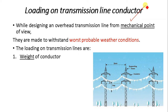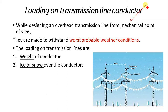The loading on the transmission line is classified into three types. First is the weight of the conductor — for example, in ACSR (Aluminium Conductor Steel Reinforced) there is the weight of aluminium and the weight of steel, so the overall weight is quite high. Second is ice or snow over the conductors, which increases the weight of the transmission line and also the projected area.